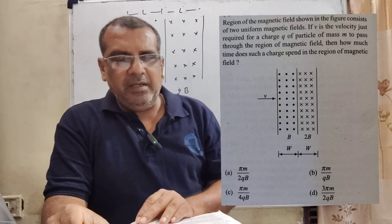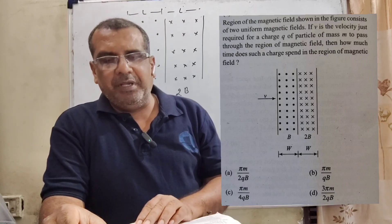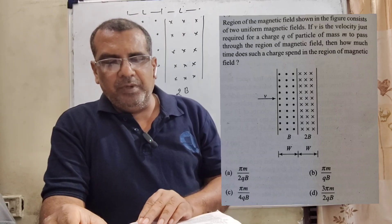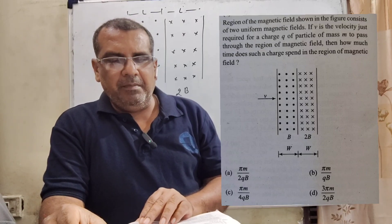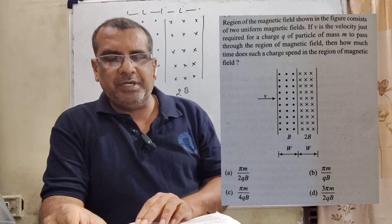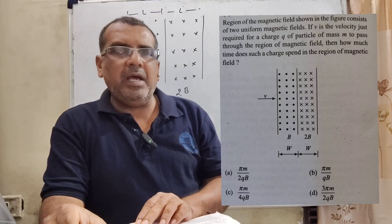Option A: pi m by 2 qb. Option B: pi m by qb. Option C: pi m by 4 qb. Option D: 3 pi m by 2 qb.